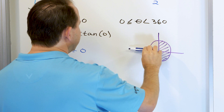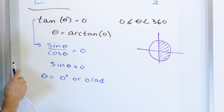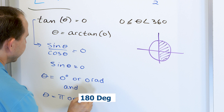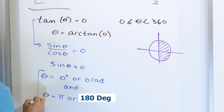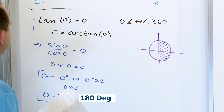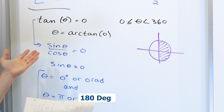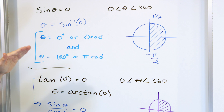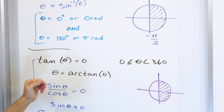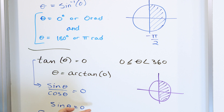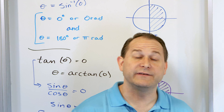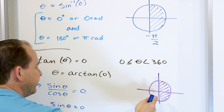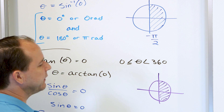Are there any other angles in this full circle range that make the tangent go to zero? It's the same question as before — are there any other angles where the sine is zero? We go over to pi, and sine of pi is also zero. So theta can also be pi or 180 degrees. In this case, we have two different equations that give exactly the same answers, because both come down to finding where the sine is zero.